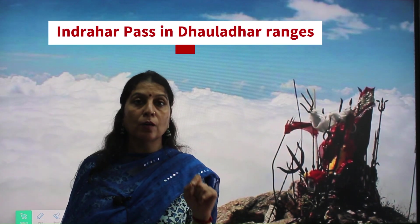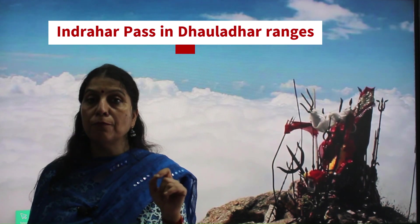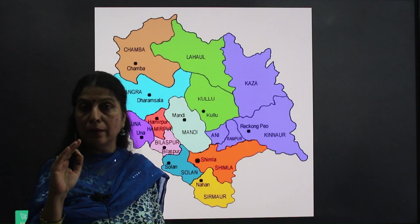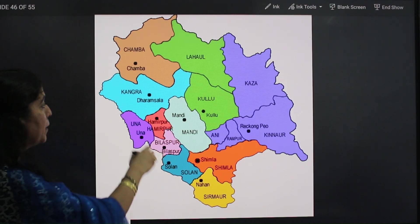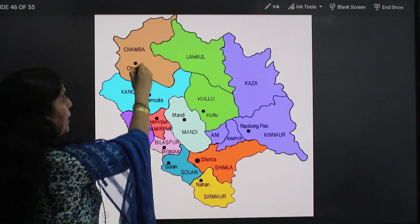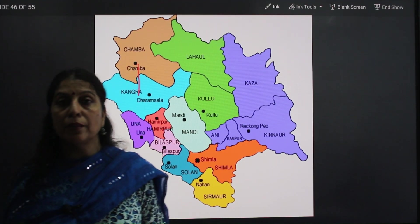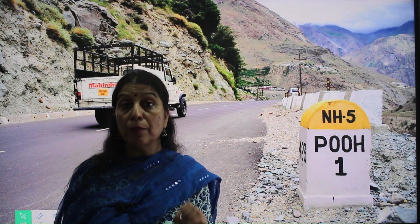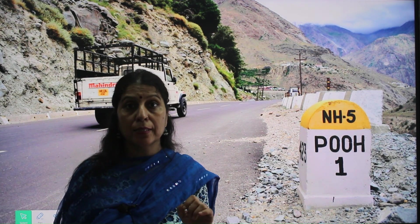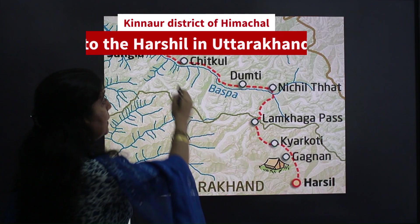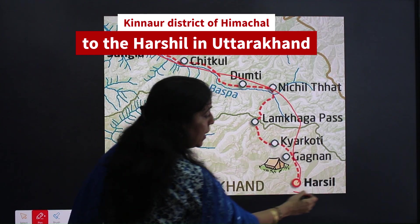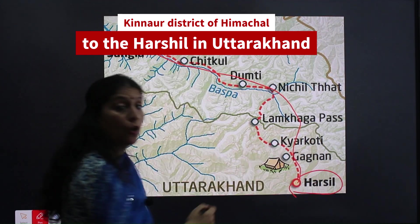The next important pass is Indrahar pass, located in the Dhauladhar ranges at an elevation of 4342 meters above mean sea level. This pass is located near Dharamshala and forms the border between the Kangra and Chamba districts of Himachal Pradesh. The next pass is Lamkhaga pass, which connects Himachal Pradesh to Harsil in Uttarakhand.